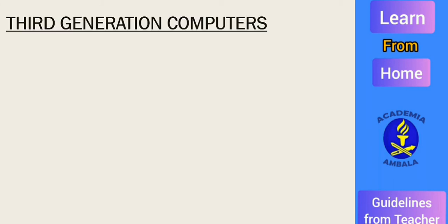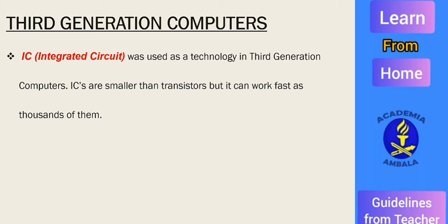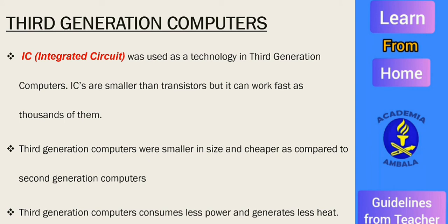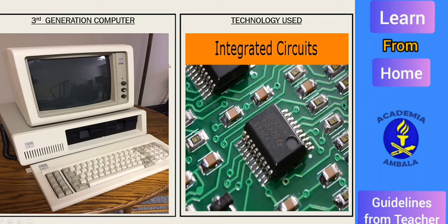Third generation computers used integrated circuit technology. Integrated circuits are smaller than transistors but can work as fast as thousands of them. Third generation computers were smaller in size and cheaper compared to second generation computers, consuming less power and generating less heat. Here you can see the third generation computer, which is very small in comparison with first and second generation, along with the integrated circuit technology used.